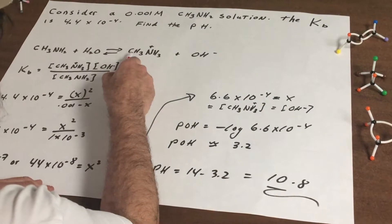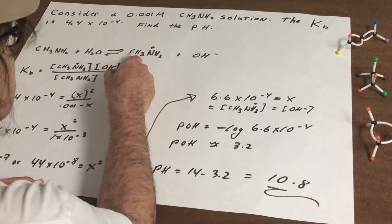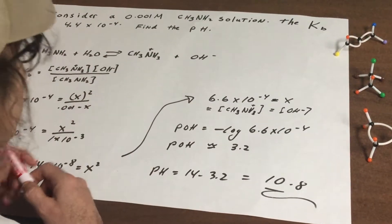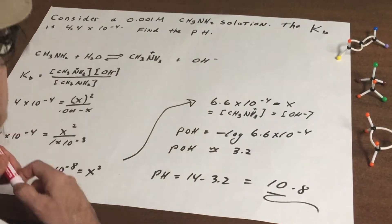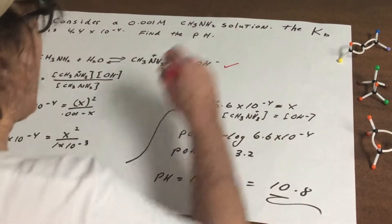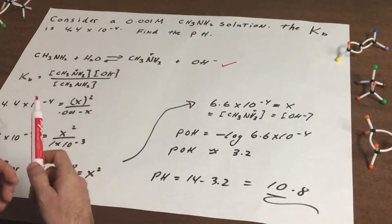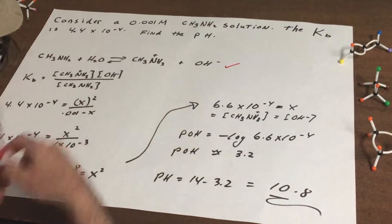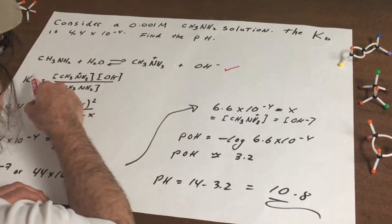So when it accepts a proton it becomes CH3NH3+ that is the methyl ammonium cation and what's left over is OH-. So that first step you have to absolutely know how to do. So all you got to do is take an H off of the water, protonate it, and you got this.